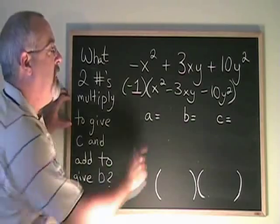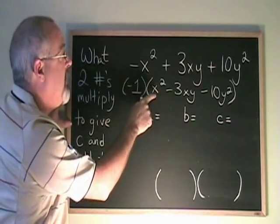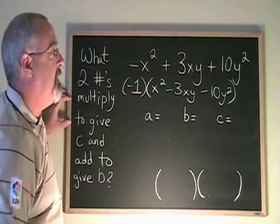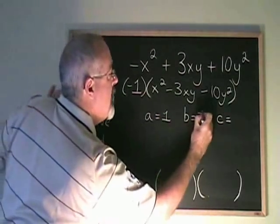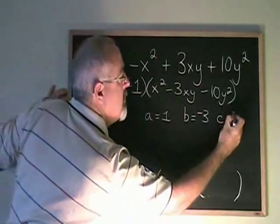Now I'm ready to perform a simple trinomial method with this trinomial inside the bracket. a is equal to 1, b is equal to negative 3, and c is equal to negative 10.